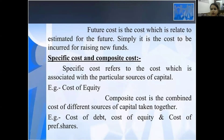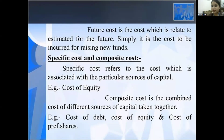The future cost of the firm is related to estimates — it is estimated for the future, and simply it is the cost to be incurred for raising new funds. Specific cost is the cost associated with a particular source of capital, such as cost of equity. Composite cost is the combined cost of different sources of capital taken together, such as cost of equity and cost of preference shares.